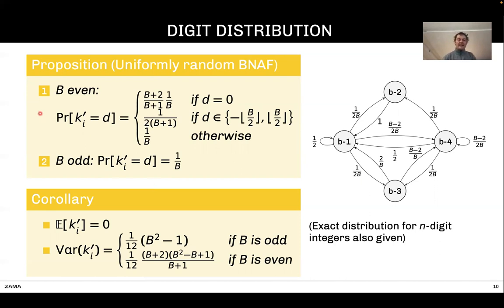From that, we computed the expectation. What is nice is that the expectation is equal to zero, so we have a centered distribution. We also computed the variance, which is given by this expression. In the paper, you can also see the exact distribution of an n-digit integer.